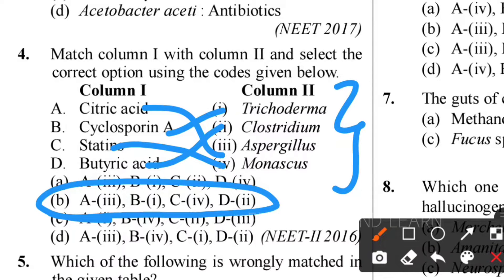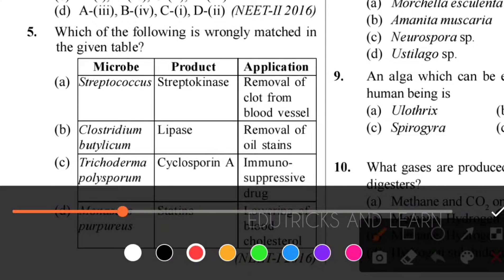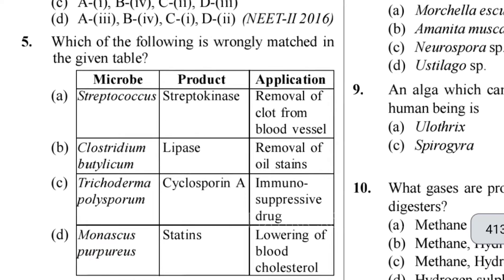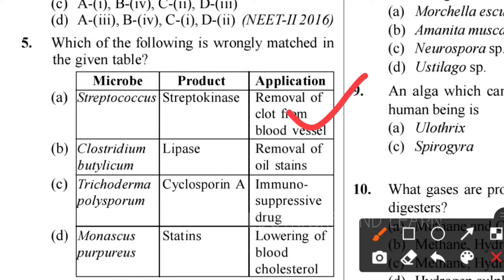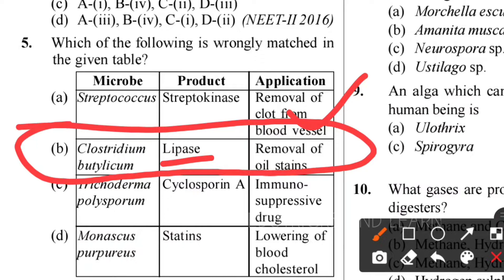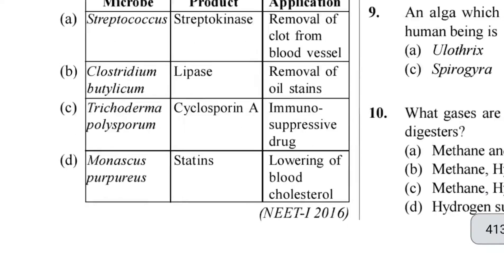Fifth question: which of the following is wrongly matched? Option A - Streptococcus gives streptokinase for removal of clots from blood vessels - correct. Option B - Clostridium butylicum - lipase for removal of stains - wrong, because Clostridium butylicum helps in production of butyric acid, not lipase. So option B is the wrongly matched pair. Option C - Trichoderma polysporum gives cyclosporine A - correct. Monascus purpureus - statins - also correct.